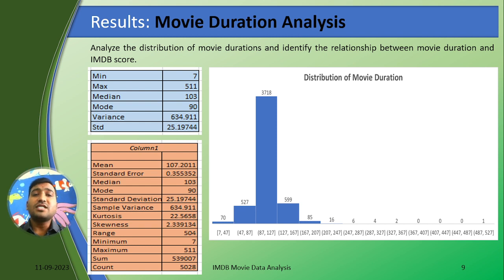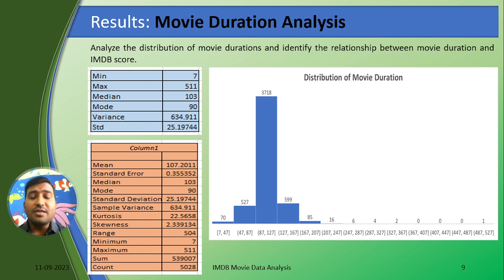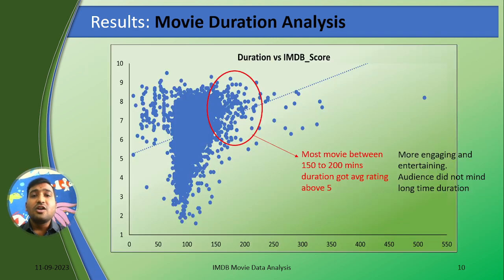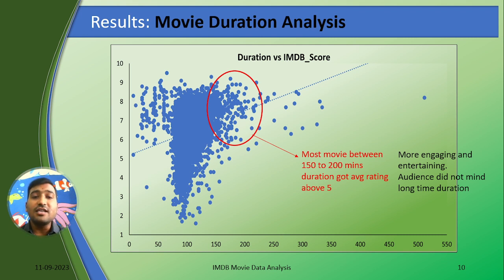Coming to the movie duration analysis, I performed descriptive statistics on time duration. We can see that the 87 minutes to 127 minutes range is the most commonly produced movie duration. Looking at the scatter chart, our focus is to get a high rating. Movies produced in the range of 150 minutes to 200 minutes received a rating above 5 every time, because such movies may be more engaging and entertaining, so audiences did not mind the longer duration.